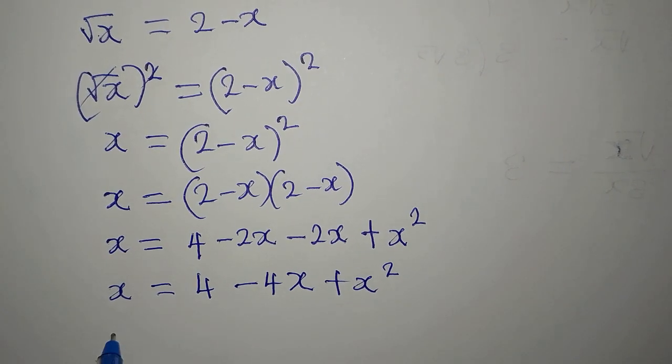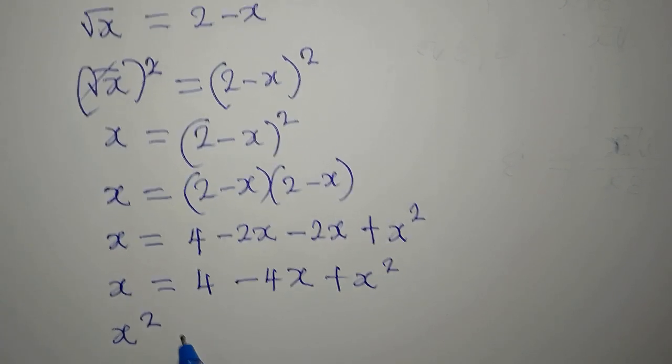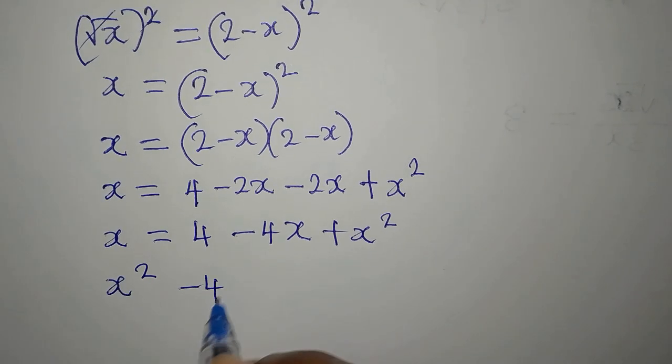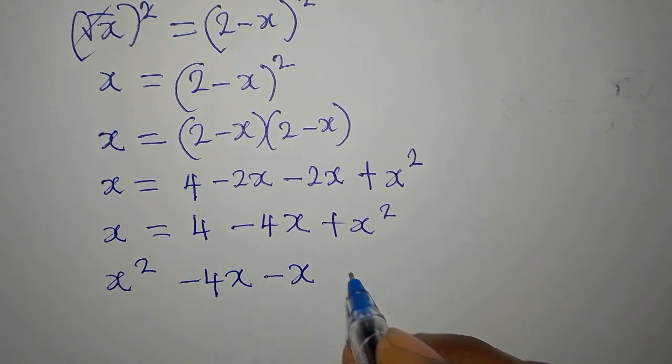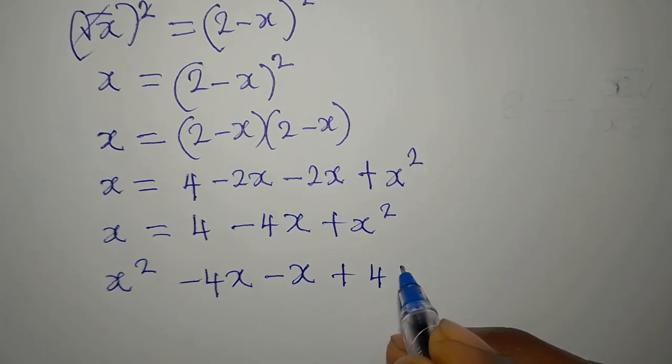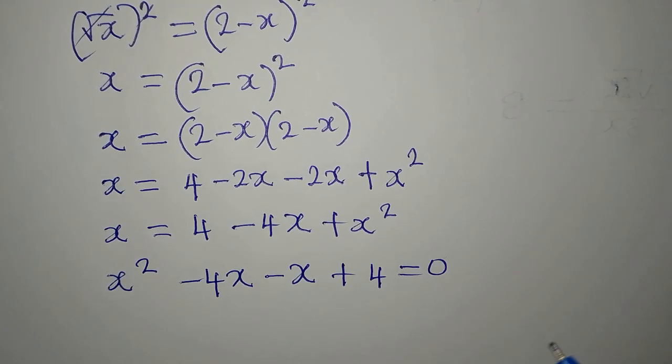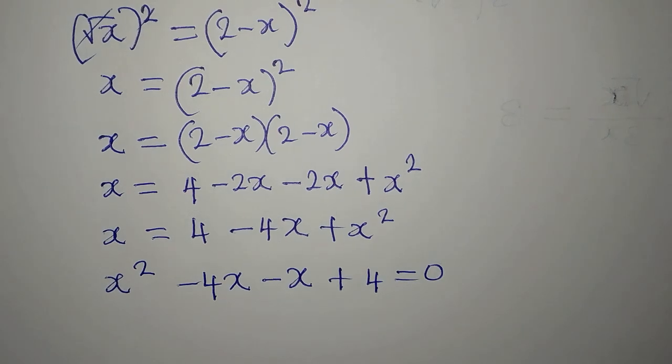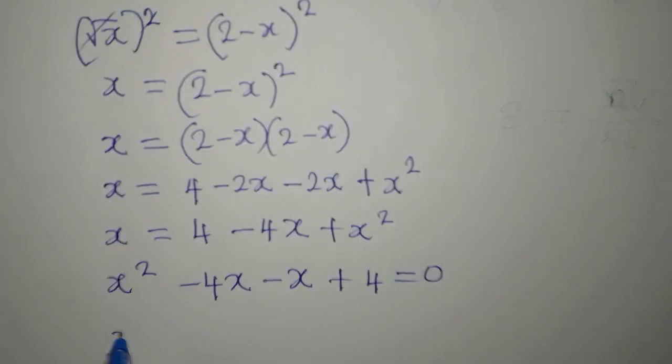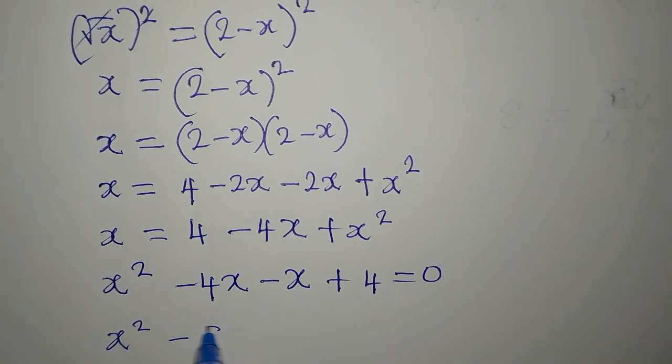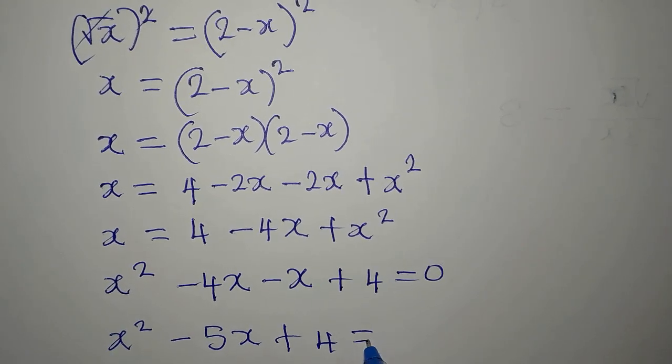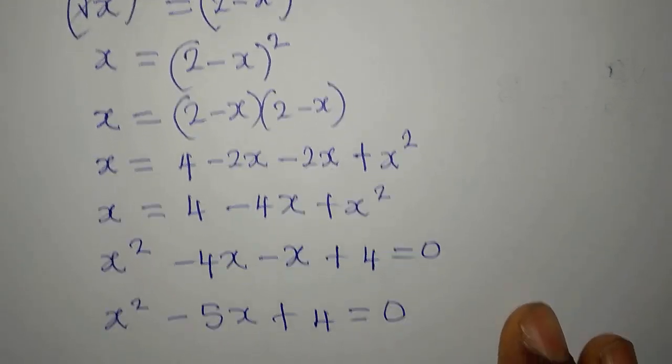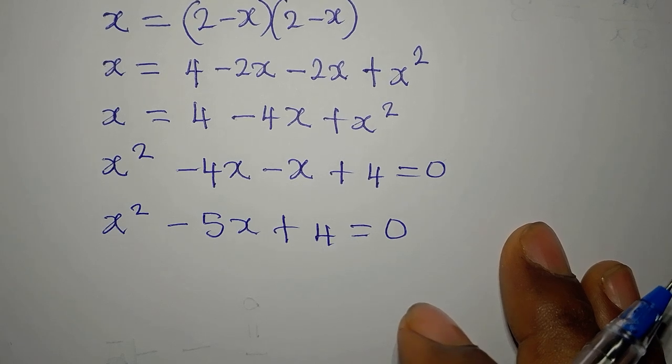Mind you, we will still need to rearrange. So I write x squared first, then minus 4x follows, this becomes minus x, and this plus 4 appears, and I equate to 0 because there's nothing again on the other side of the equation. Now x squared minus 5x plus 4 is now equal to 0. Now we have a quadratic equation.